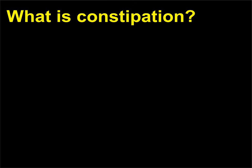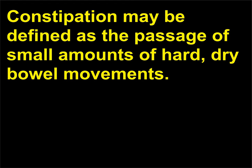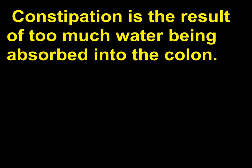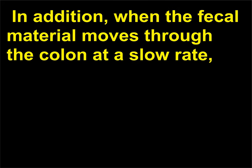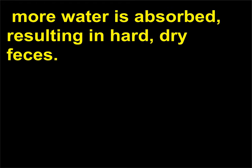What is constipation? Constipation may be defined as the passage of small amounts of hard, dry bowel movements. Constipation is the result of too much water being absorbed into the colon. In addition, when the fecal material moves through the colon at a slow rate, more water is absorbed, resulting in hard, dry feces. Diets high in fiber help prevent constipation.